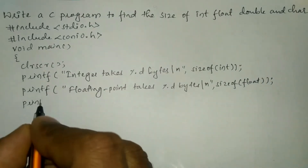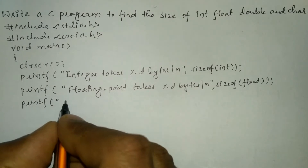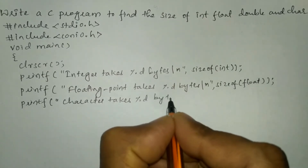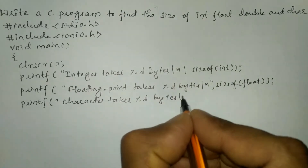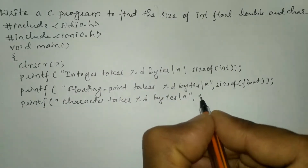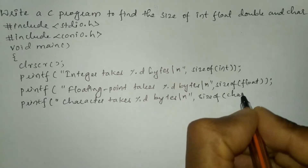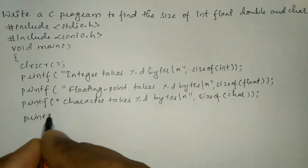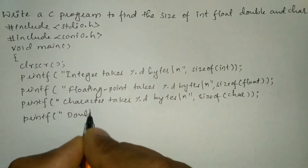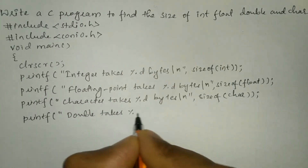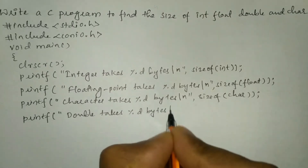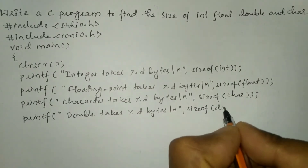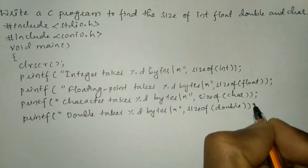Now let us write a printf statement: character takes percentage d bytes backslash n, and we will use sizeof with char type of data. Then I am going to write another printf statement: double takes percentage d bytes backslash n, and again we will use the sizeof operator passing double, closing the bracket, and putting semicolon.